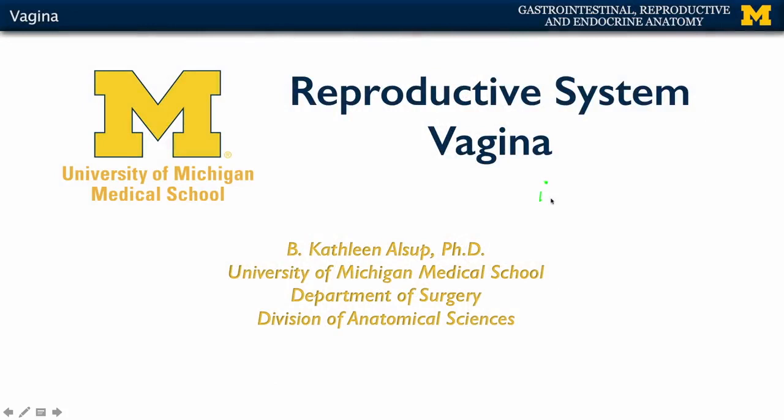Let's talk about some of the functions of the vagina. The first is the canal for menstrual flow. Secondly, this is the inferior portion of the birth canal. Thirdly, it plays a role in sexual intercourse — it will receive the penis as well as the ejaculate.